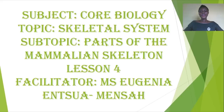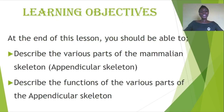Hello class, welcome to lesson 4 of the skeletal system. Today we are going to look at parts of the mammalian skeleton. I'm Miss Eugenia. At the end of this lesson you should be able to describe the various parts of the mammalian skeleton. Today we are going to look at the appendicular skeleton. In the previous lesson we looked at the axial skeleton, and we will also describe the functions of the various parts of the appendicular skeleton.